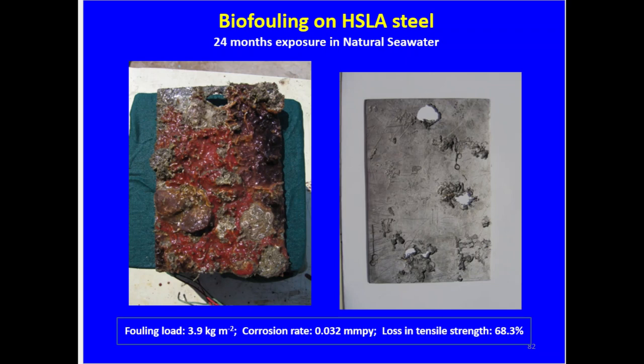However, the loss in tensile strength is about 68.3%, which is very dangerous as far as the strength of the material is concerned. This can cause premature damage or collapse of structures at any time. One has to be very careful in material selection even at the design stage, especially in a dynamic environment like natural seawater.